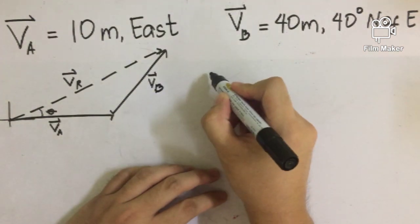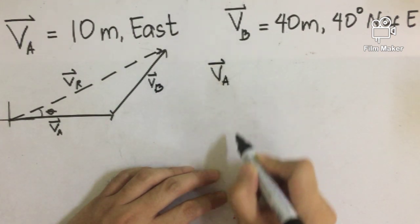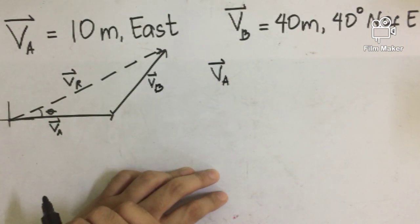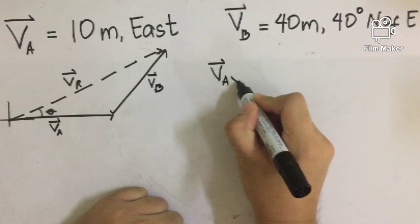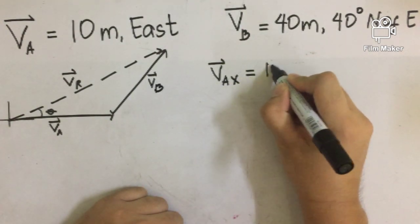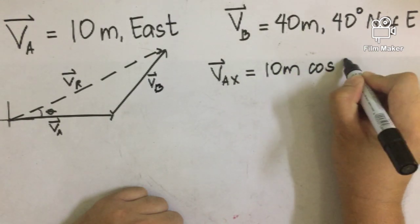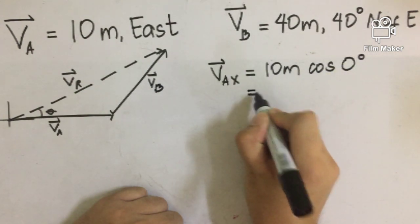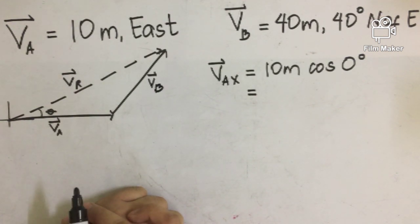We can write that Vector A has two different components: the x component and the y component. We can write Vector A sub x to denote the x component of Vector A, which is equal to 10 meters cosine zero, because Vector A is lying along the x-axis, and on the x-axis the angle of projection is equal to zero.